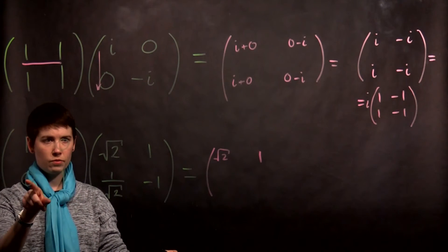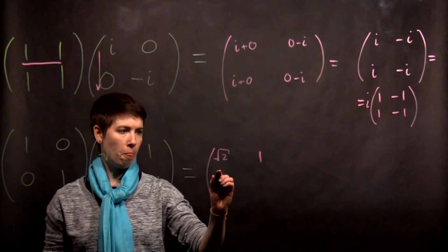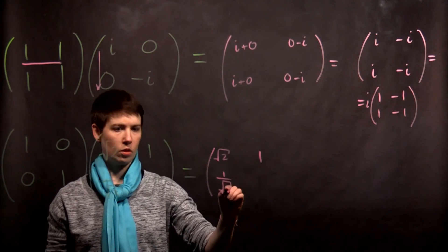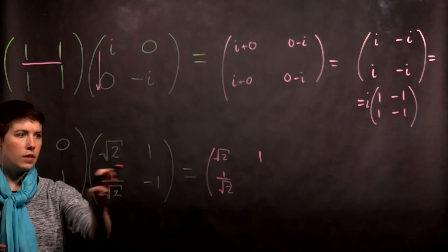Second row, we have 0 times square root of 2, 1 times 1 over square root of 2. We then go row times column, so 0 times 1, 1 times negative 1.